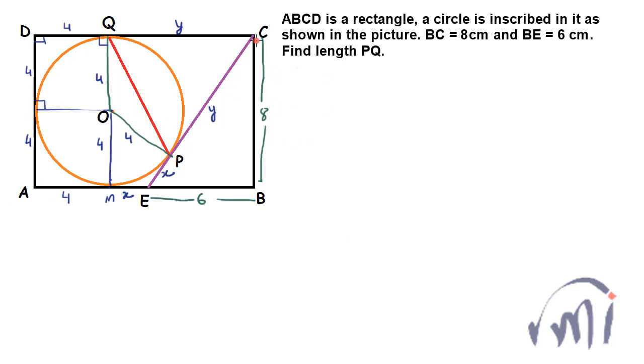Now we can see that CEB is a right angle triangle, that means we can use Pythagorean theorem. So x plus y whole square will be equal to 8 square plus 6 square, or you can say this will be equal to 64 plus 36 equal to 100, or you can say x plus y will be equal to 10 cm.